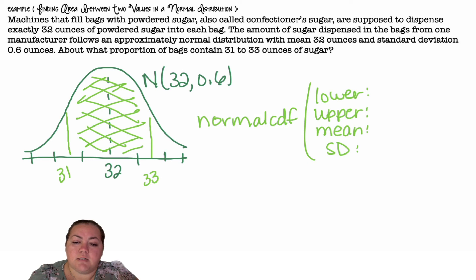Alright, normal CDF. This time my lower bound is going to be 31. My upper bound is going to be 33. My mean is 32. And my standard deviation is 0.6. And we get 0.9044. If you were going to use the table method, you have to find the z-score for both 31 and 33. Find the area to the left of those, and then subtract those areas from each other.